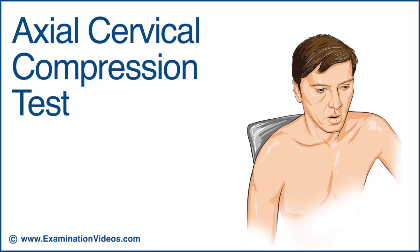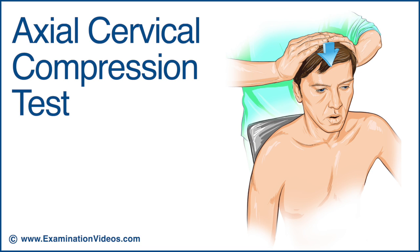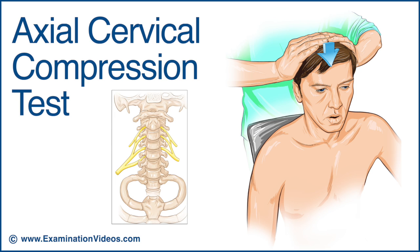With the patient in the seated position, place your hands on top of the patient's head and gradually build a firm downward pressure to compress the cervical spine. The test is considered positive if there is a reproduction or exacerbation of radicular symptoms, which indicate nerve root compression.